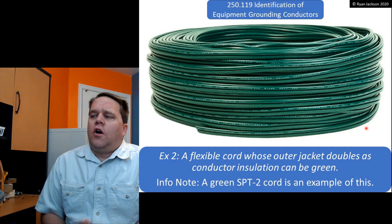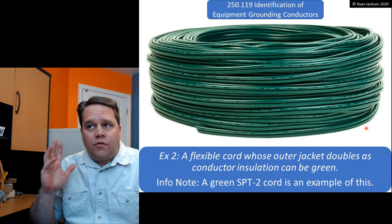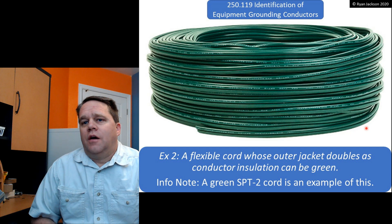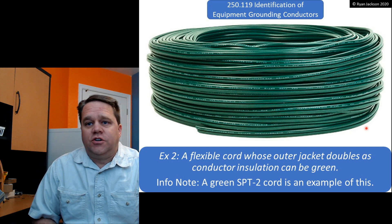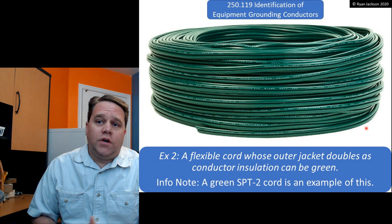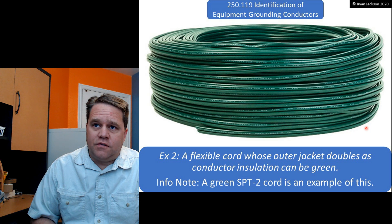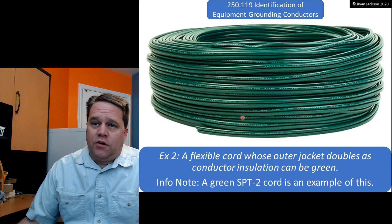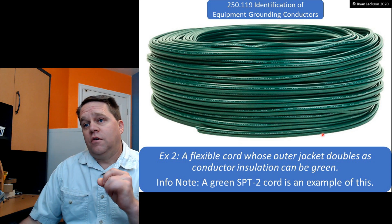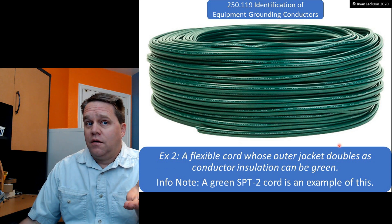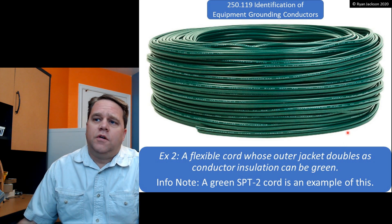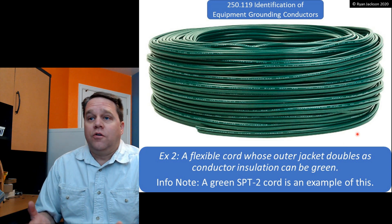The second exception is a bit of an oddity. A flexible cord whose outer jacket doubles as conductor insulation can also be green. There's an informational note stating that a green SPT-2 cord is an example of this — the cord insulation itself is also the conductor insulation. Since we can't have green conductors unless they're equipment grounding conductors, this exception was added a few code cycles ago to allow green cords.